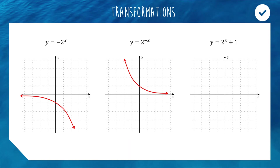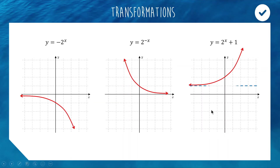For 2 to the x plus 1, adding 1 increases all y-values by 1, so the curve shifts up by 1 unit. Previously the asymptote was the x-axis — we could never cross or touch it because 2 to the power of something can never equal 0. Now our asymptote has shifted up by 1 unit, so it's at y equals 1. If anybody needs help spelling 'asymptote,' you can email my good friend Key.